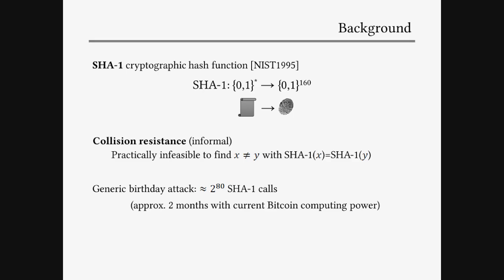There is a generic birthday search attack that basically allows you to find such collisions in about 2 to the power 80 SHA-1 calls. And we can already see that 80-bit security is not enough nowadays if you look at Bitcoin. With the current Bitcoin computing power, it would take about 2 months of that much computing.